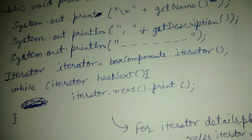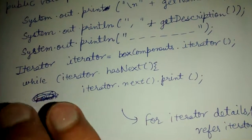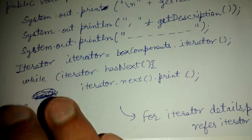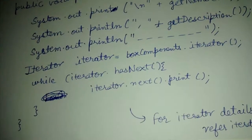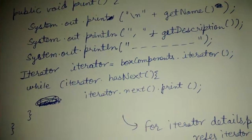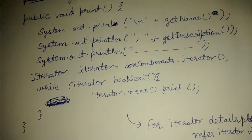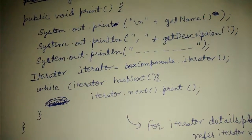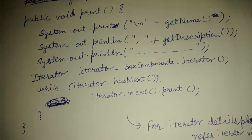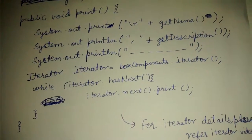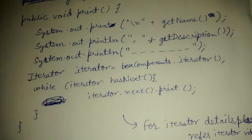Please look at the iterator design pattern video if you are not understanding this piece of code. Finally, the main motto of the composite design pattern is to treat leaves as well as composites uniformly. Thank you.